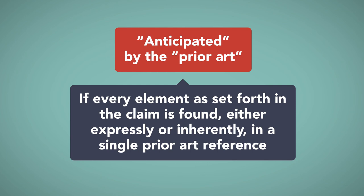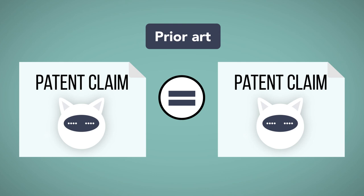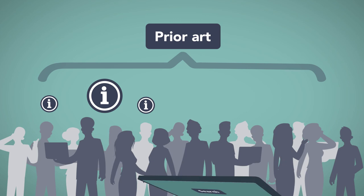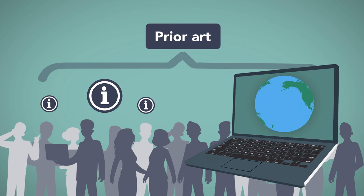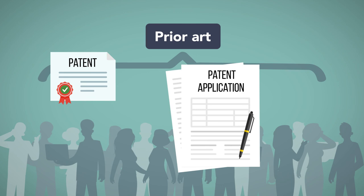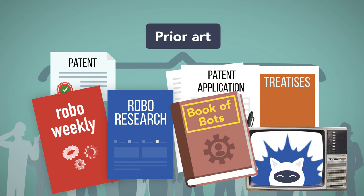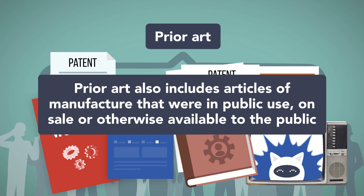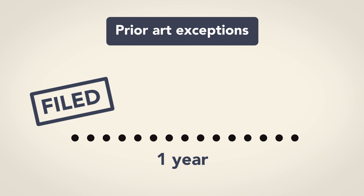The prior art must show the identical invention in as complete detail as contained in the patent claim. Prior art encompasses all publicly available information anywhere in the world that existed prior to the filing date of the patent application. Thus, prior art includes articles of manufacture shown in patents, patent applications, published research papers, other written publications, treatises, books, and advertisements. Prior art also includes articles of manufacture that were in public use, on sale, or otherwise available to the public. Patent law does provide important exceptions: disclosures made within a year of filing are considered not prior art if the disclosure was made by the inventor or by someone who obtained the subject matter from the inventor.